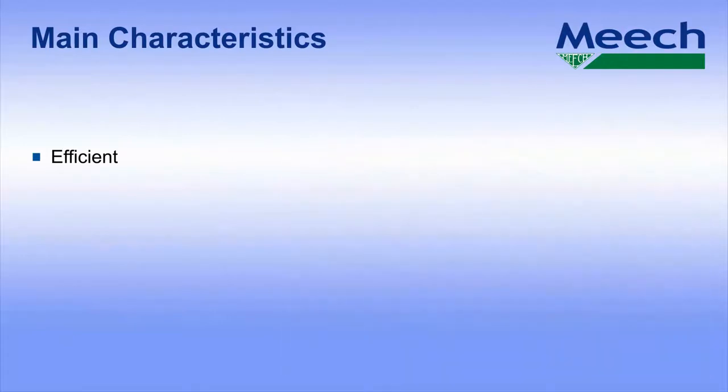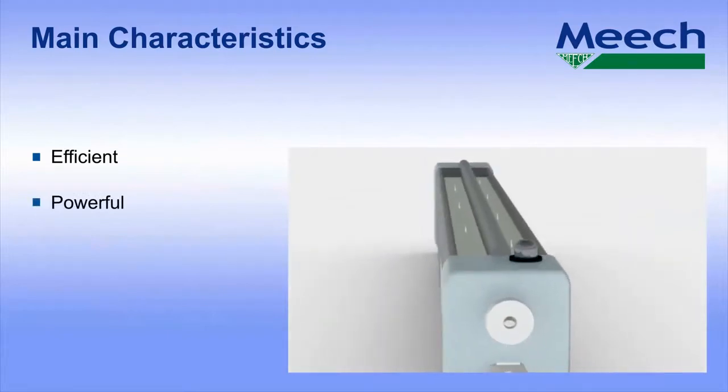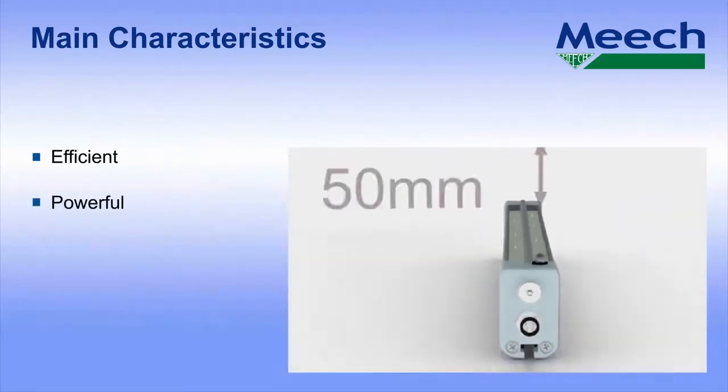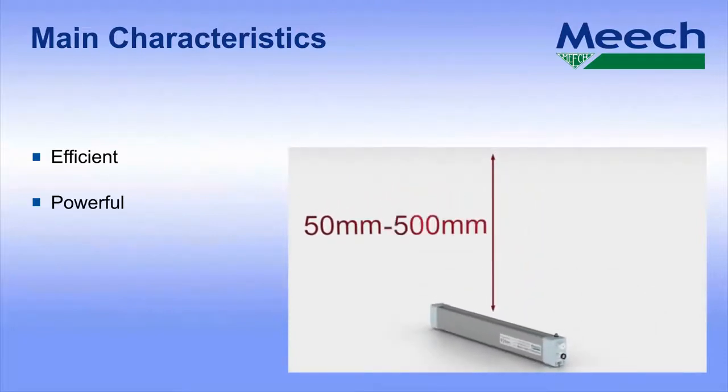The 10KV pulse DC output gives class leading performance. The default output settings will provide ideal static control on most installations, with target distances from 50 to 500 millimeters.